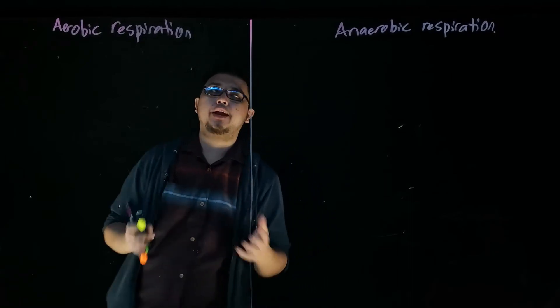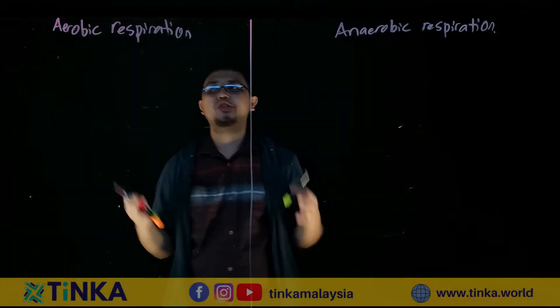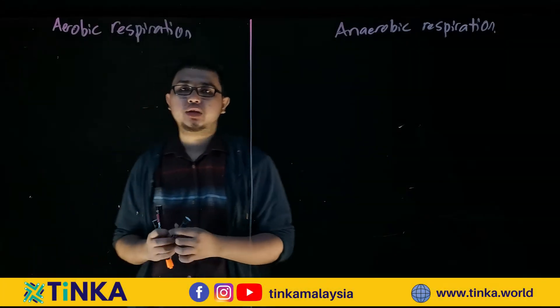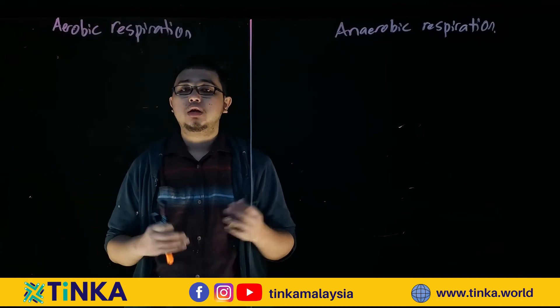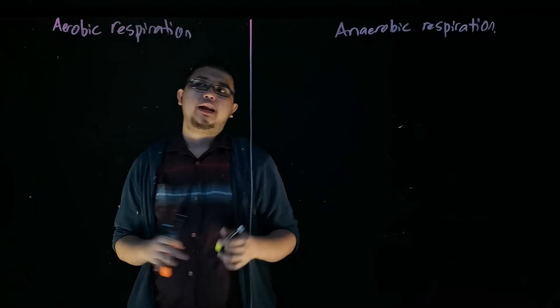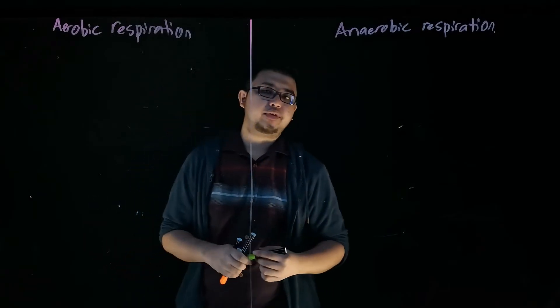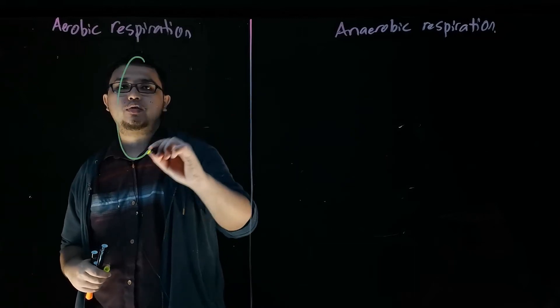Alright, now we're going to talk about aerobic respiration and anaerobic respiration in greater detail. I showed you earlier that glucose is converted first to pyruvate and then to carbon dioxide and water, as well as energy. For glucose to convert to pyruvate, it must take place within your cytoplasm.